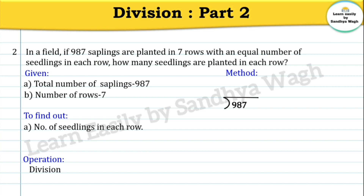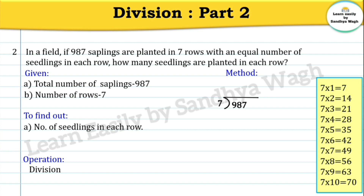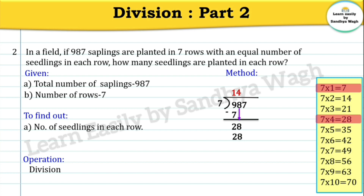Given: total number of seedlings is 987, total rows is 7. We have to find how many seedlings are planted in each row. Now let us divide 987 by 7. Here 987 is the dividend and 7 is the divisor. Dividing the leftmost digit 9 — 9 is not in the 7s table exactly, so the nearest number is 7. We write 1 as the quotient since 7 ones are 7. Subtracting 7 from 9 gives 2. Bringing down the next digit 8 gives 28. 7 fours are 28, so we write 4 as the quotient and subtract 28 from 28, giving 0.